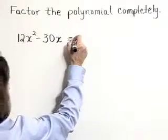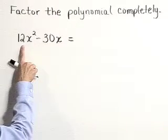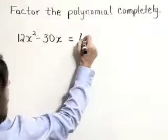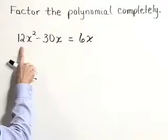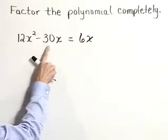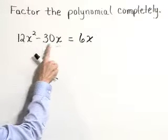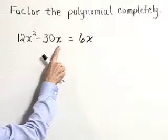And with this polynomial, we do indeed have a greatest common factor, which is 6x. 6 is the largest factor of 12 and 30, and both of these terms have at least a factor of x to the first power.